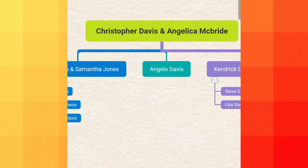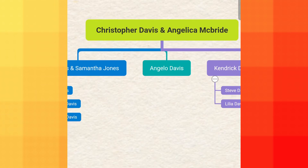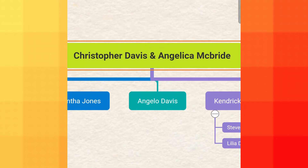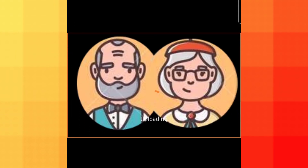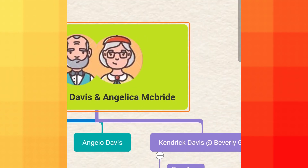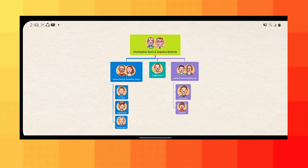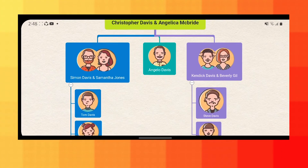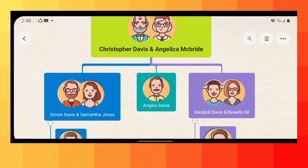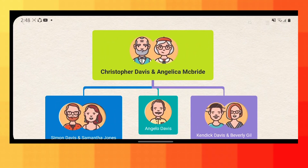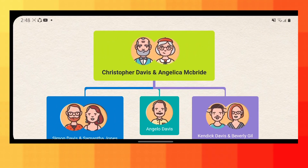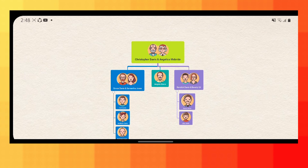In case you need to add images, tap this icon and then look for the image to use and tap it. You'll also have the option to modify the texts, lines, and notes according to your liking.